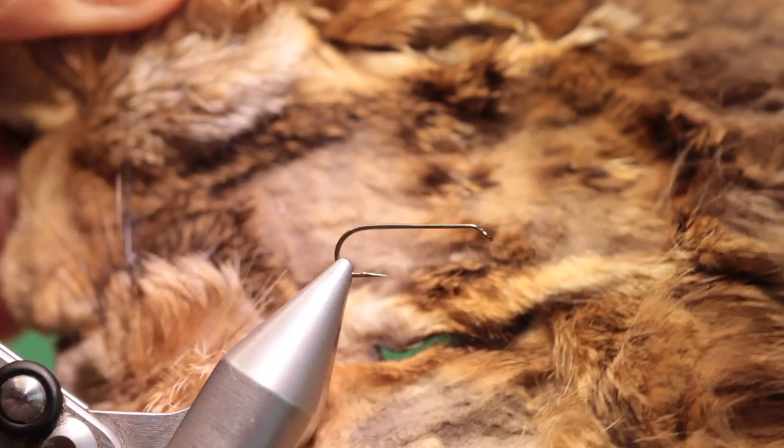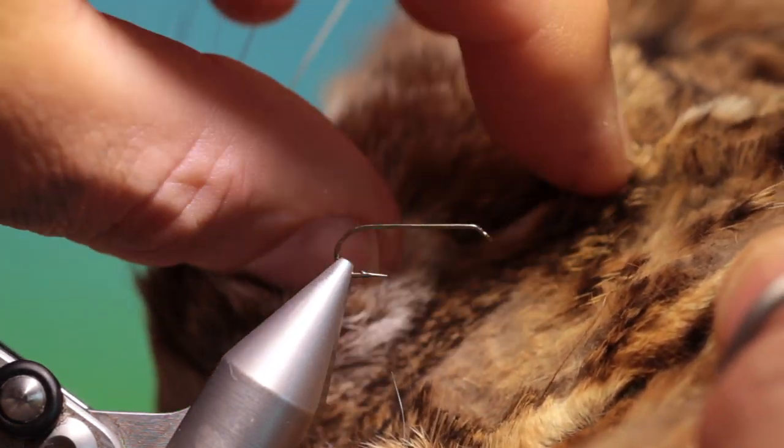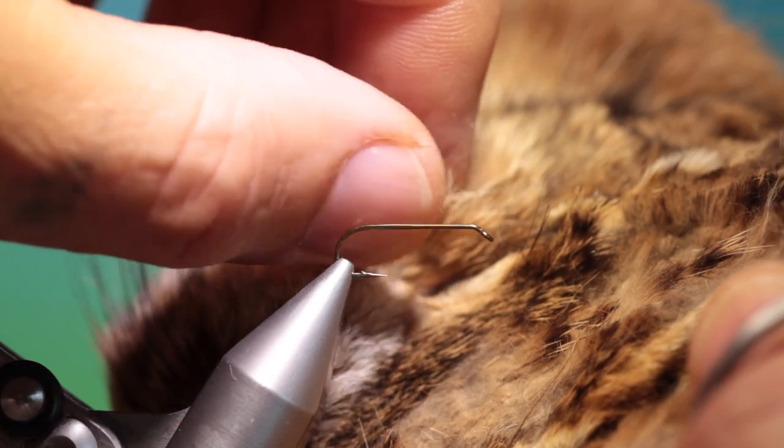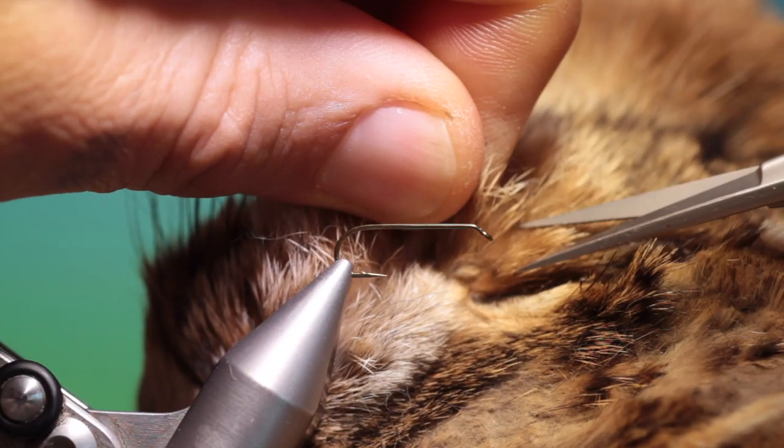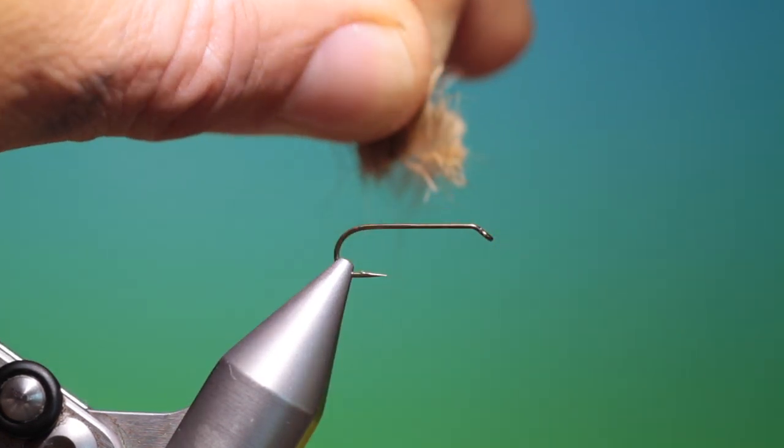Then what we do is we take a hare's mask and you want to mix the colours here so we'll take some of this honey. All we do is we hold the hair like this and we make a little cut. Get rid of the mask.